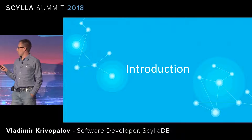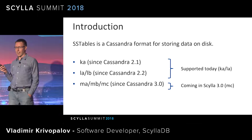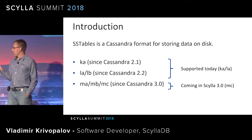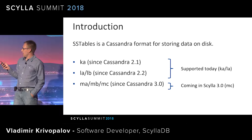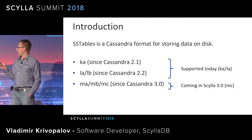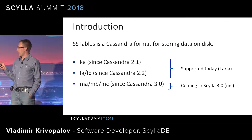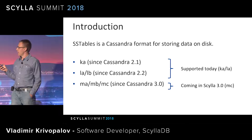For the introduction: SSTables is a Cassandra format for storing data on disk. SSTables stands for sorted strings. There are various formats of SSTables. Regarding the naming scheme, it all started with the letter I, then J, K, L. Now it's format M. The second letter is a minor version, introducing some additions to the major format.